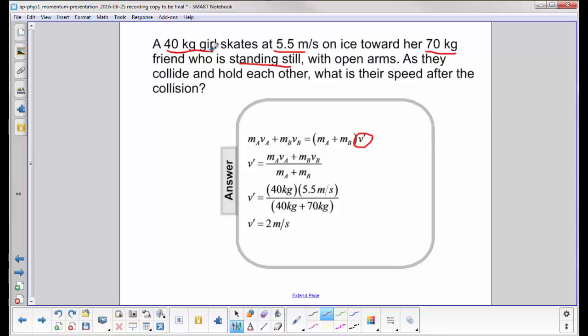Now, we assumed that the first girl was skating in the positive direction, so after they collided and stuck together, their final velocity has the same sign. They are also moving in the same direction.